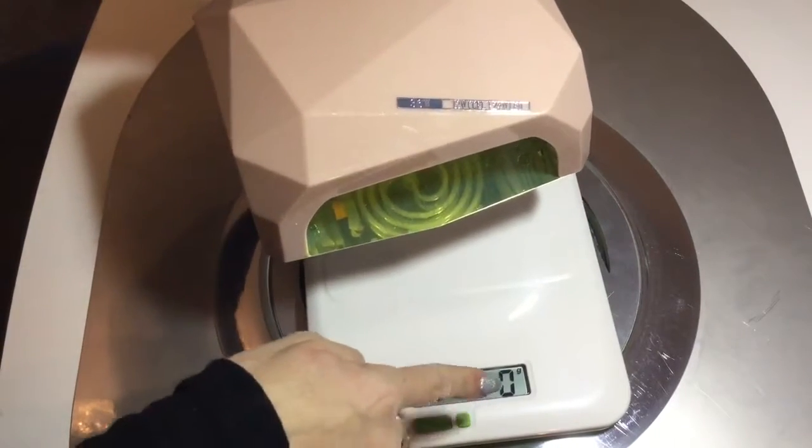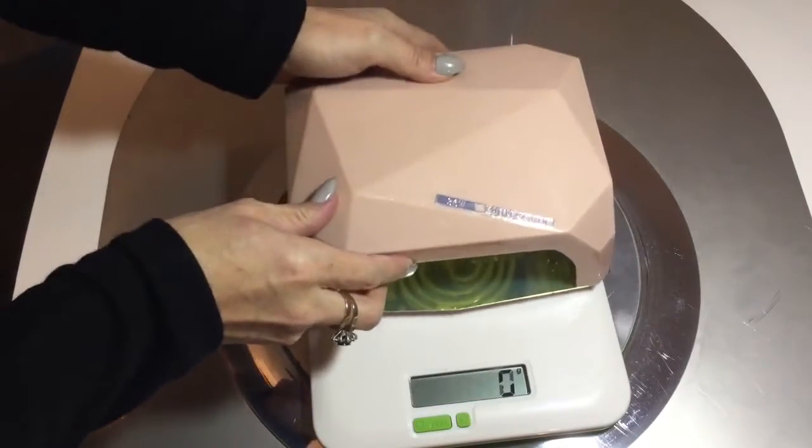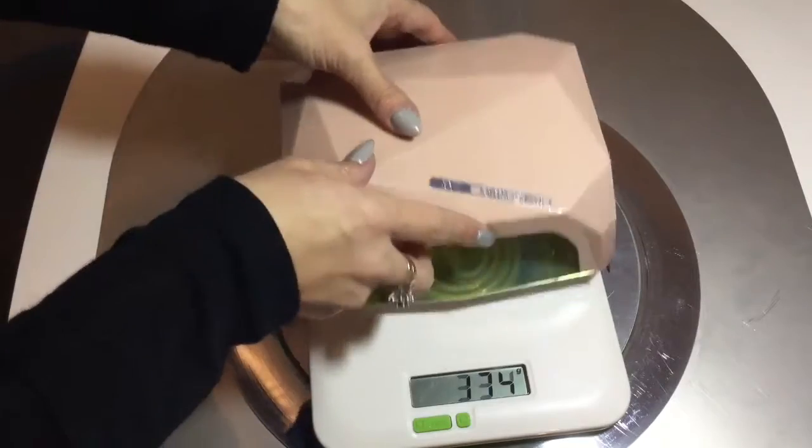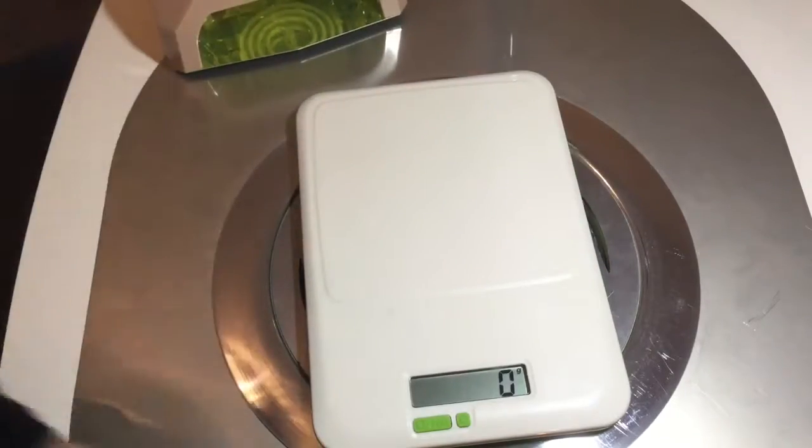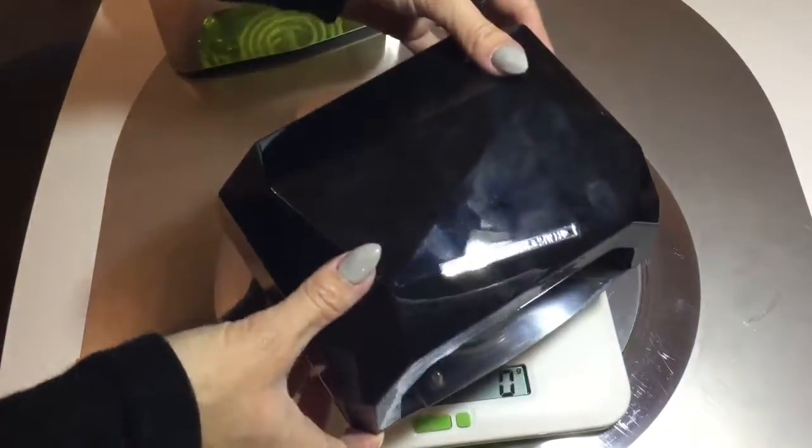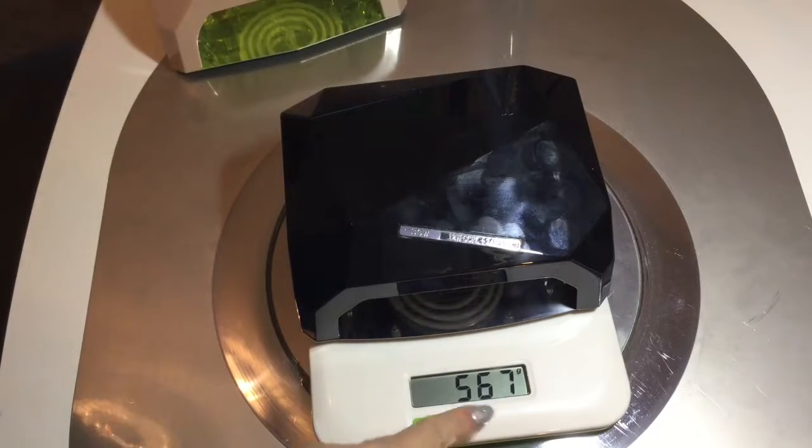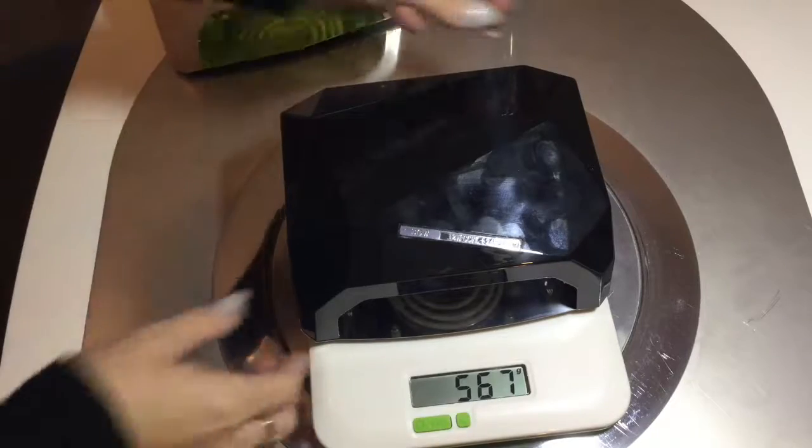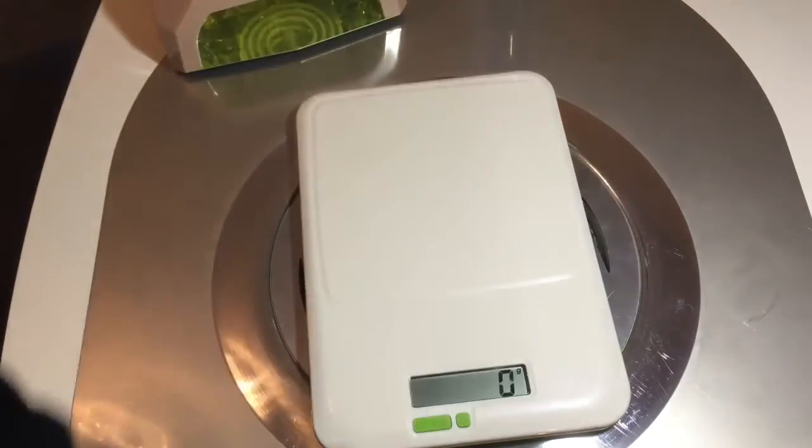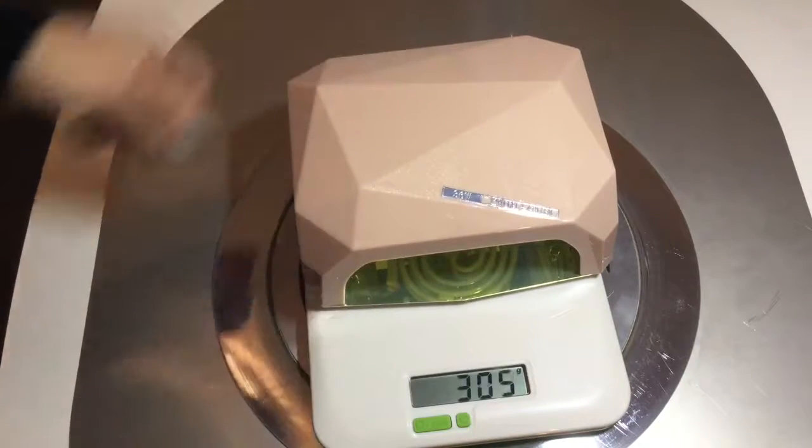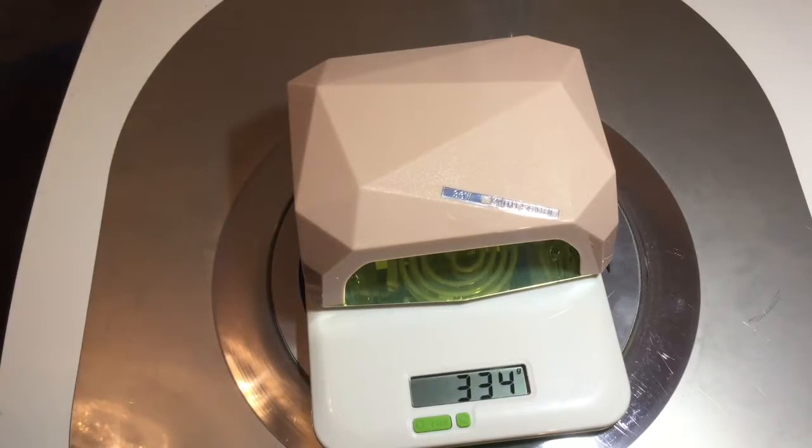This is the Aliexpress lamp. As you can see, that is 334 grams. Seems legit, works perfectly fine. Now this is the Now Perfect lamp. As you can see, at a whopping 567 grams, there is quite a big difference in what's on the inside of the lamps, and that's probably the most important thing. So a big weight difference.